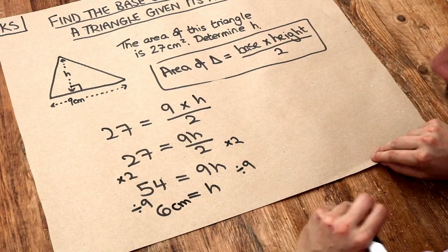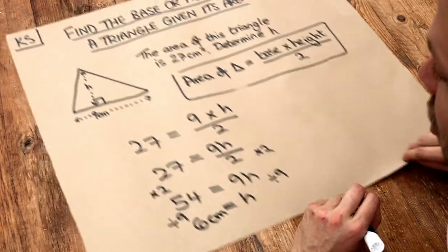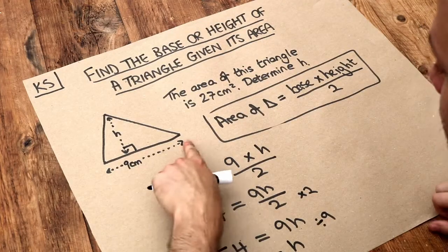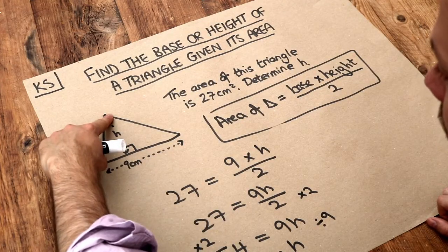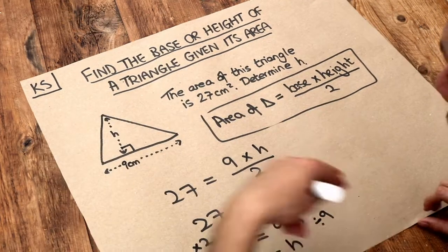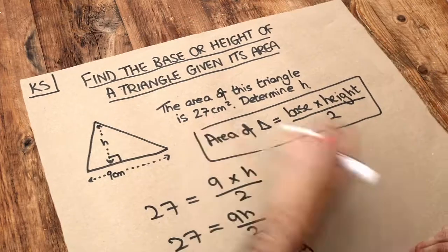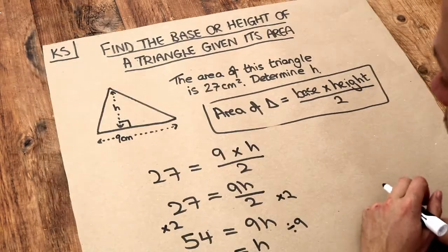And so therefore the height is 6 centimeters. Let's just check that by going forwards. 9 times 6 is 54, then divided by 2 is 27, which gives us the correct area. We know that we've got the answer right.